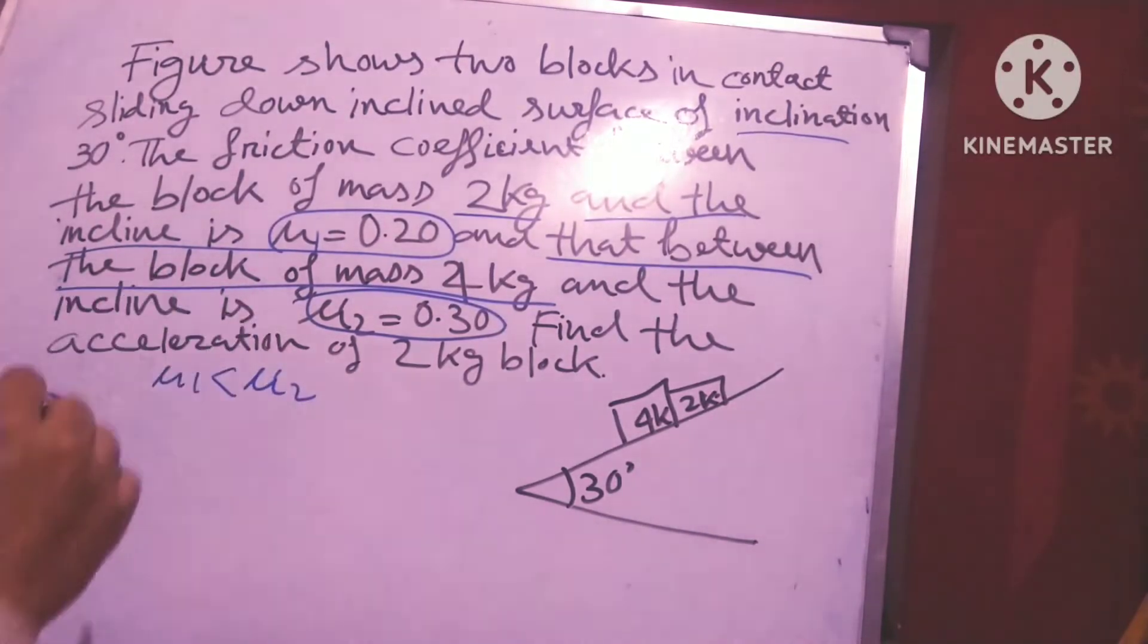So acceleration of the 2 kg block down the plane will be more than the acceleration of the 4 kg block if allowed to move separately.